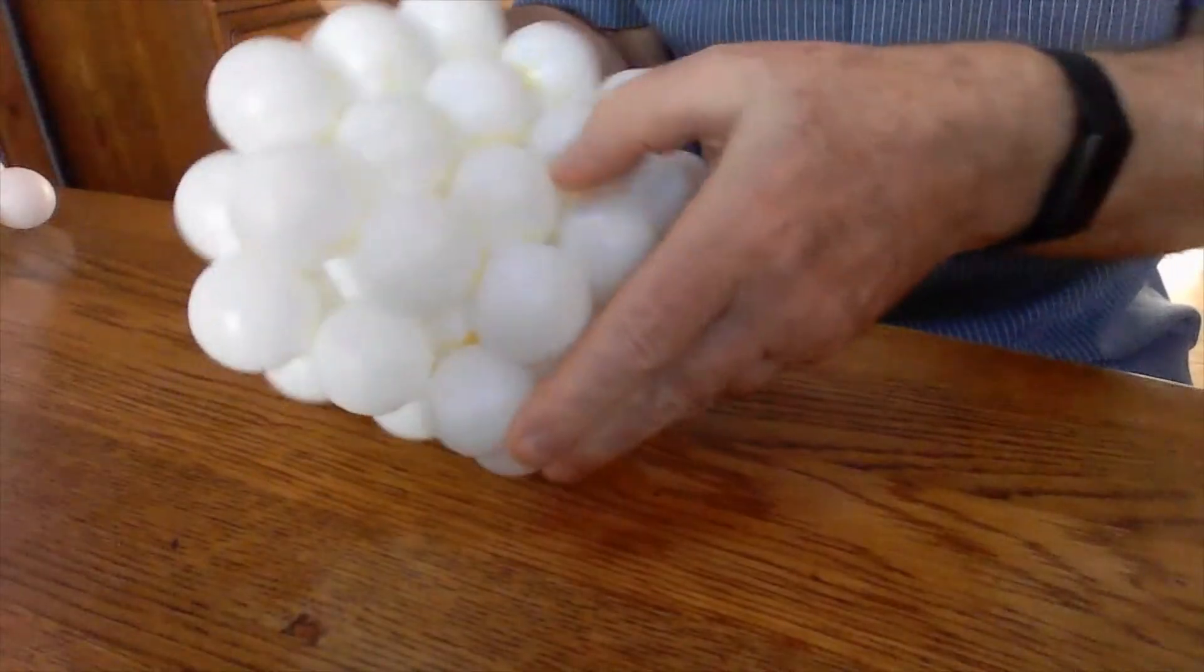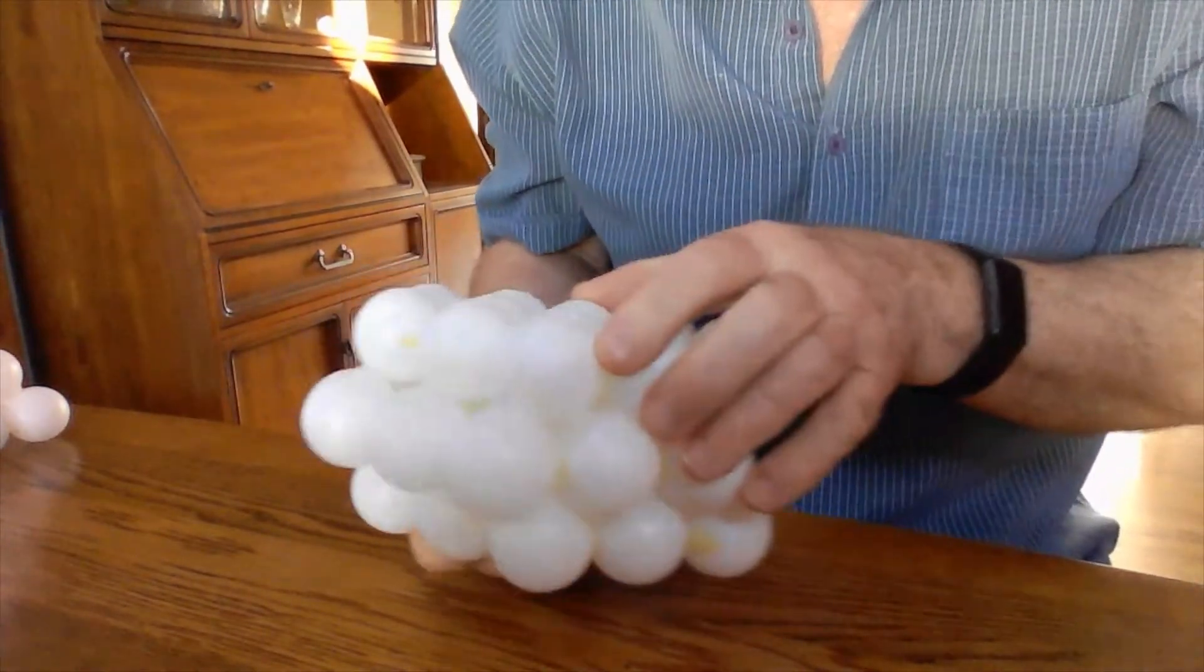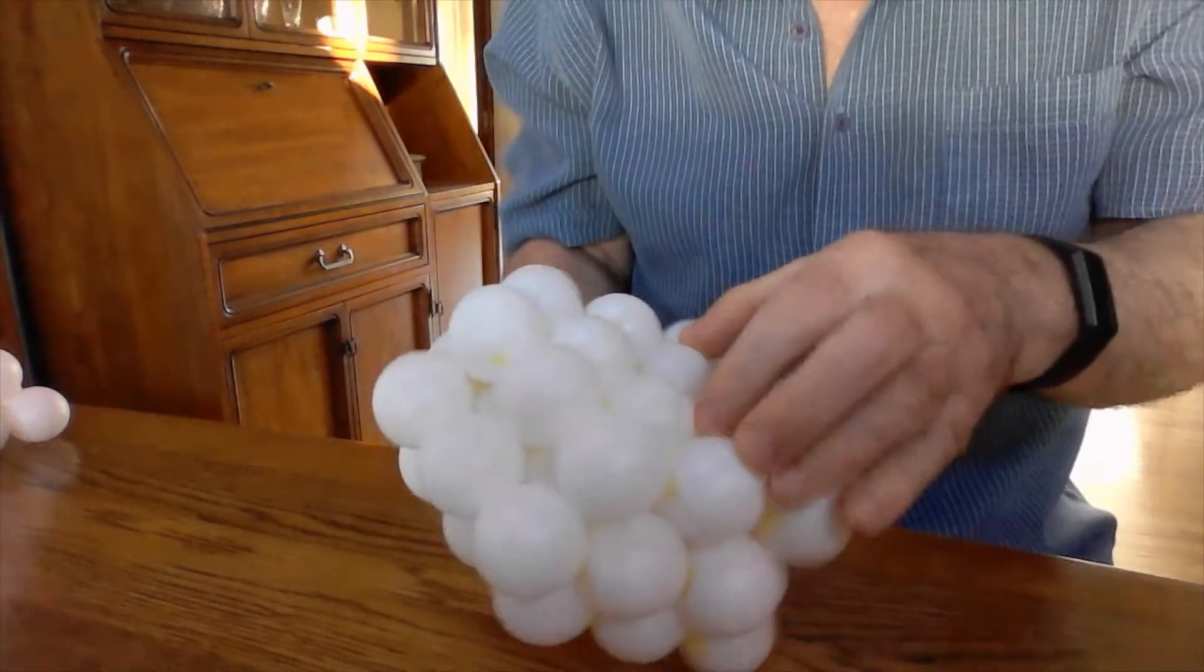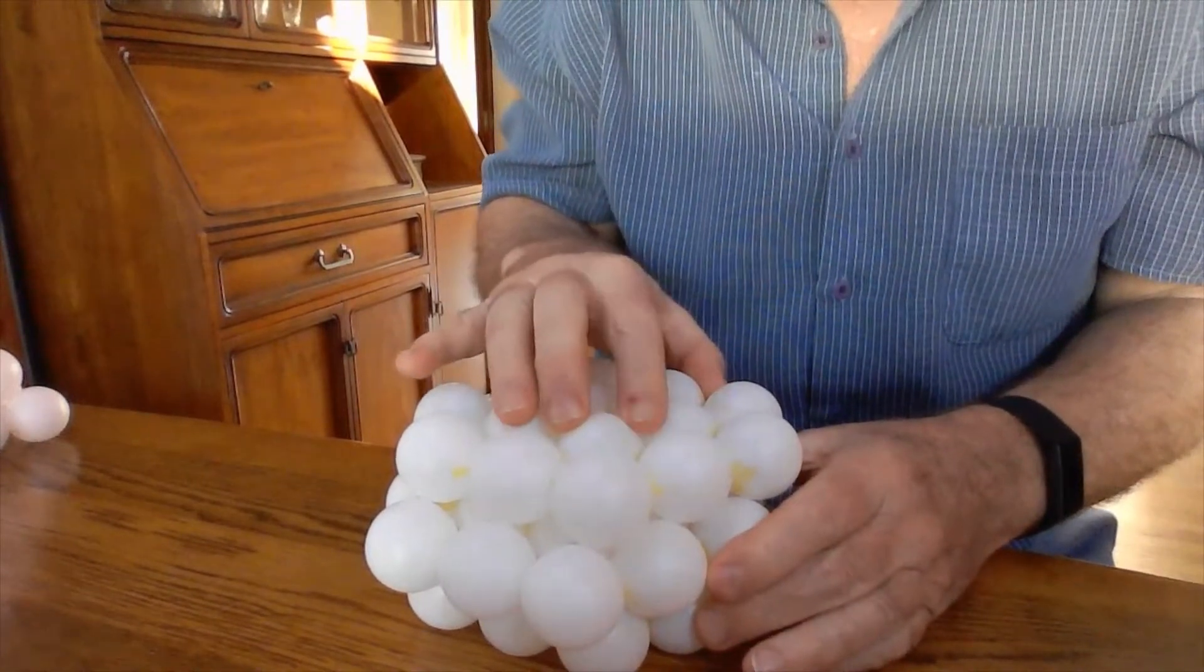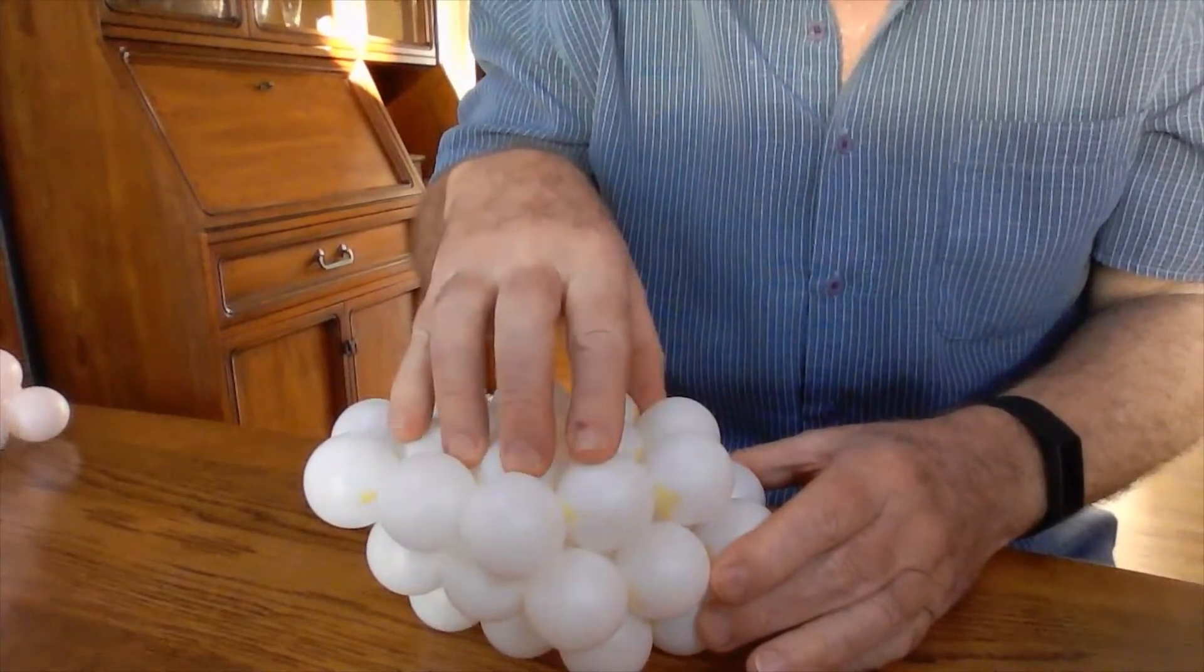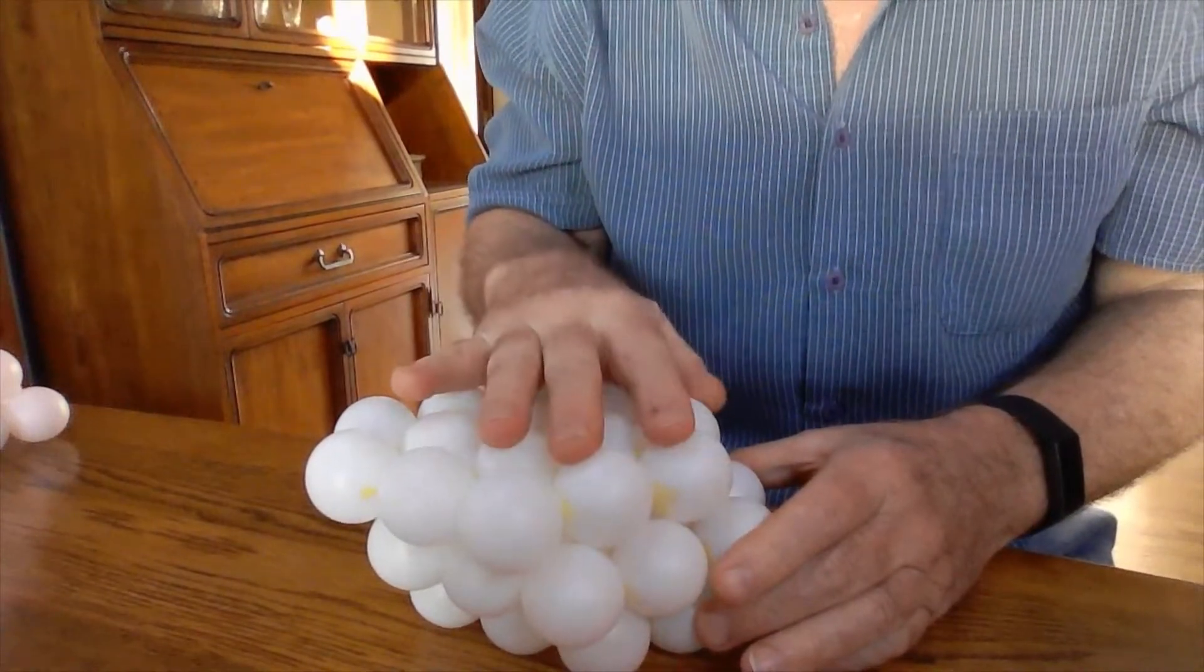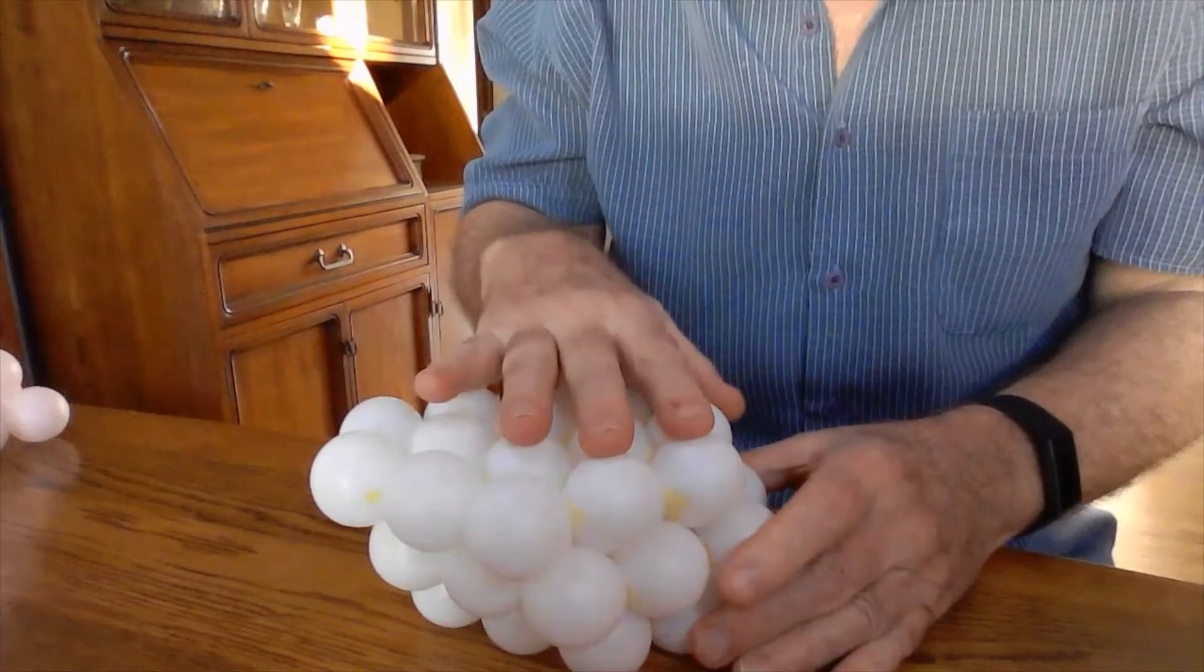Here's a hexagonal cell. What we have here is an ABA stacking. And what we have here is on a basal plane we have the option to slip by two partials, one, two. And that moves from here to here, one, two, one, two. And in that sense it's identical to the FCC. So slip on a basal plane in the hexagonal is identical to FCC.